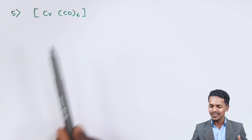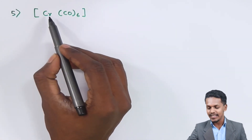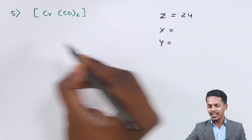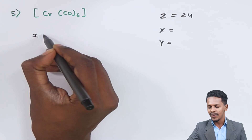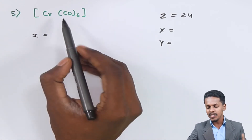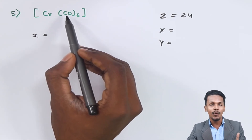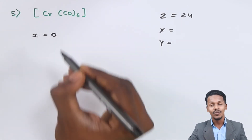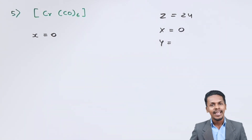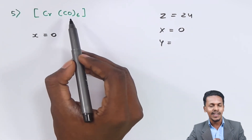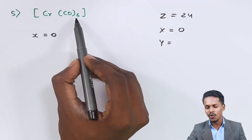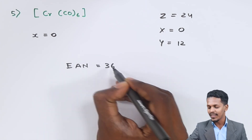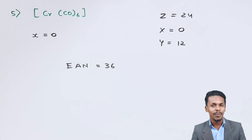The next complex has chromium as the central metal atom, with an atomic number of 24. The ligand is carbonyl (CO), a neutral ligand, so the chromium carries no charge and X = 0. There are 6 carbonyl ligands, each contributing 2 electrons, so Y = 6 × 2 = 12. EAN = 24 − 0 + 12 = 36, equal to the atomic number of Krypton.